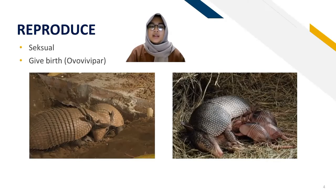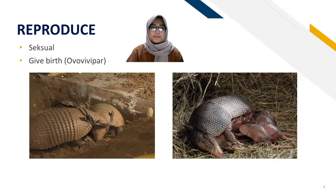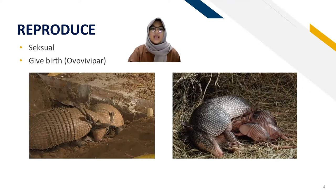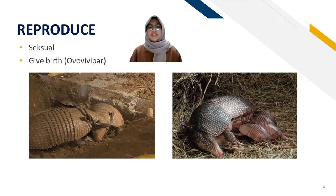Armadillos reproduce sexually and give birth, or are ovoviviparous. During the breeding season, armadillos have courtship behavior towards their mate. This includes a few touches between them in the dorsal area, movement of the tail, and the female exposing her genitals while the male smells it.